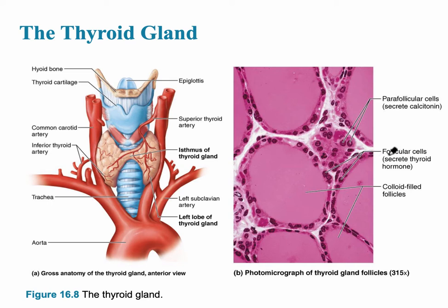The next slide shows the structure of the thyroid gland. We can see the follicle cells, which secrete thyroid hormone, and the parafollicular cells, which secrete calcitonin affecting calcium. This is important because calcitonin opposes the action of parathyroid hormone, which is secreted from the parathyroid glands visible on the posterior view of the thyroid gland.